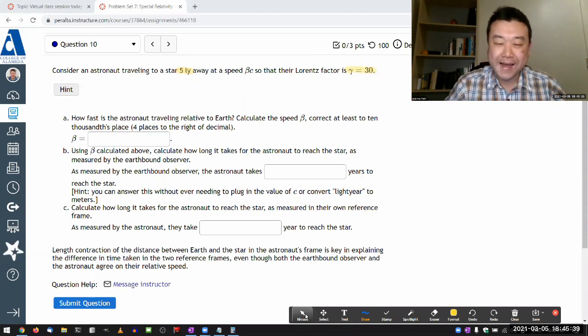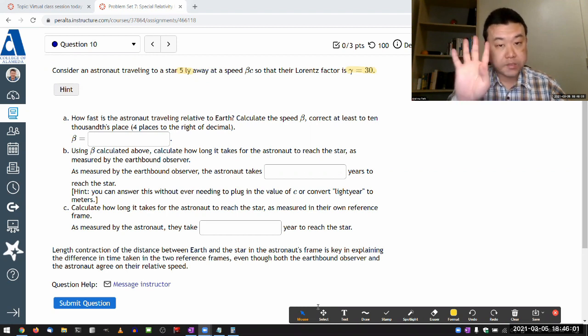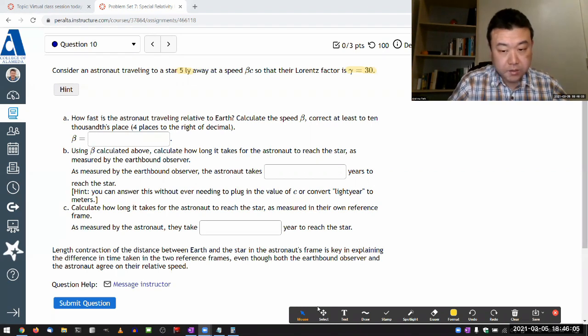That seems fairly high, and in fact, when you calculate beta, you will see that it's pretty high. That's why the instruction asks how fast is the astronaut traveling relative to Earth, specifying at least four places to the right of decimal. So, at least four significant figures. Let me do the calculation. I recommend that you...